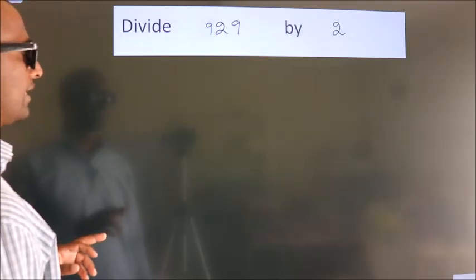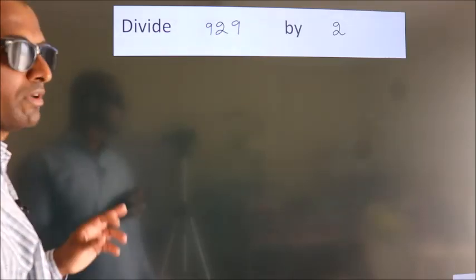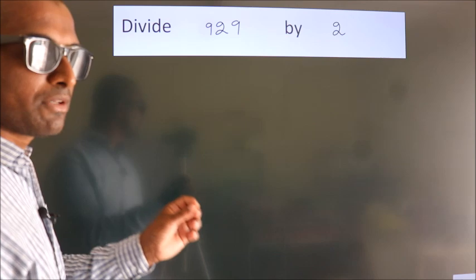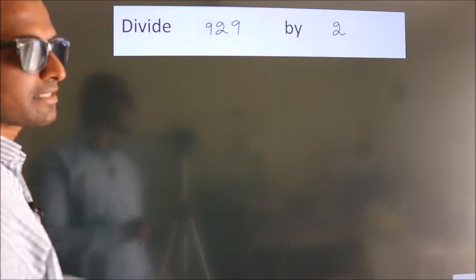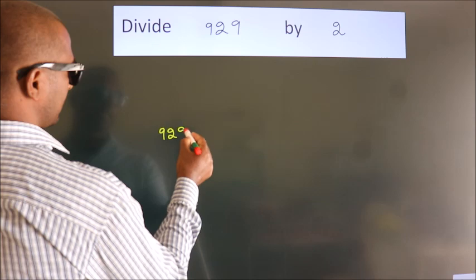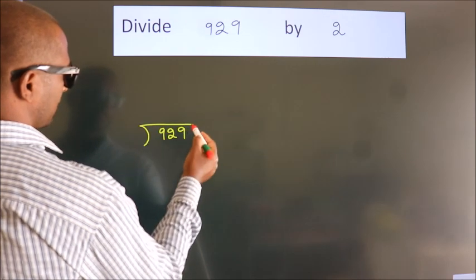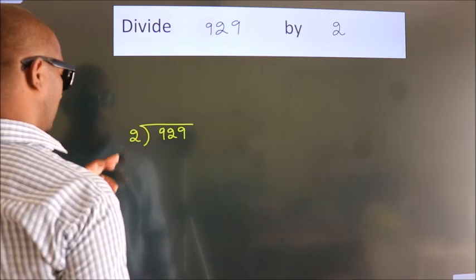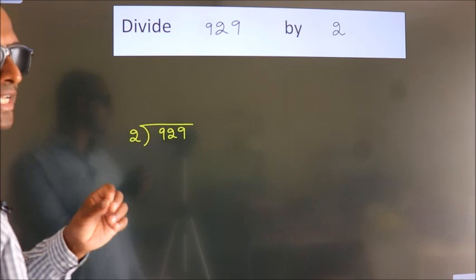Divide 929 by 2. To do this division, we should frame it in this way. 929 here, 2 here. This is your step 1.